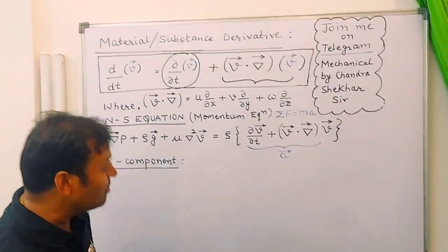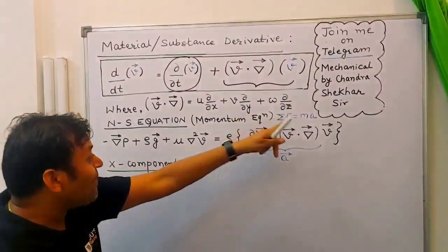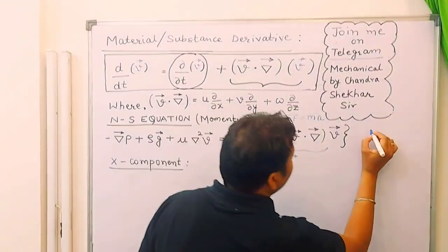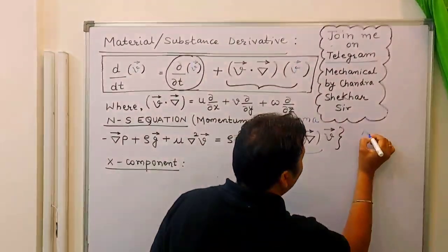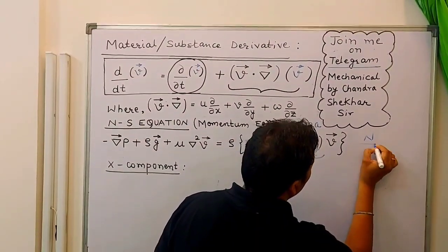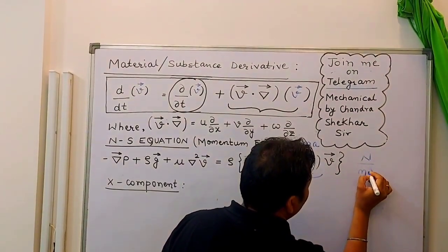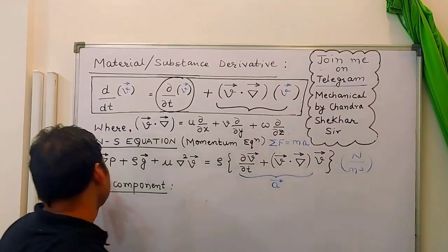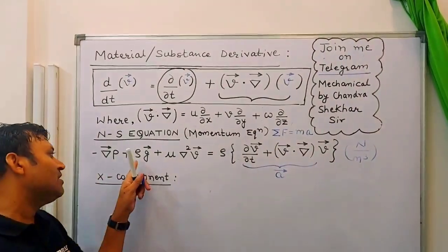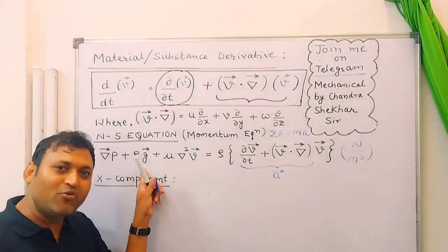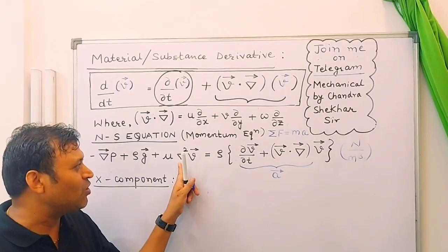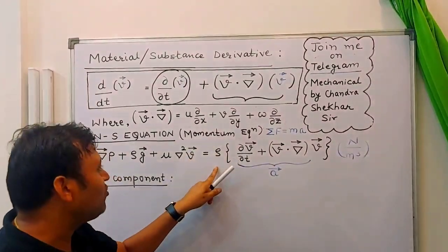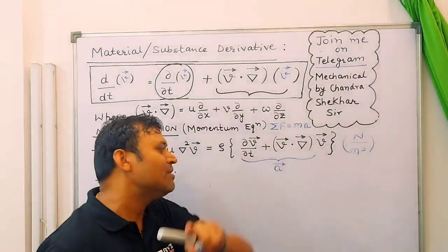Force equals mass into acceleration, but mass is divided by volume, so the unit of each and every parameter here will be newtons per meter cubed. Pressure force per unit volume, gravity force per unit volume, viscous force per unit volume equals mass per unit volume — that is density — into acceleration.